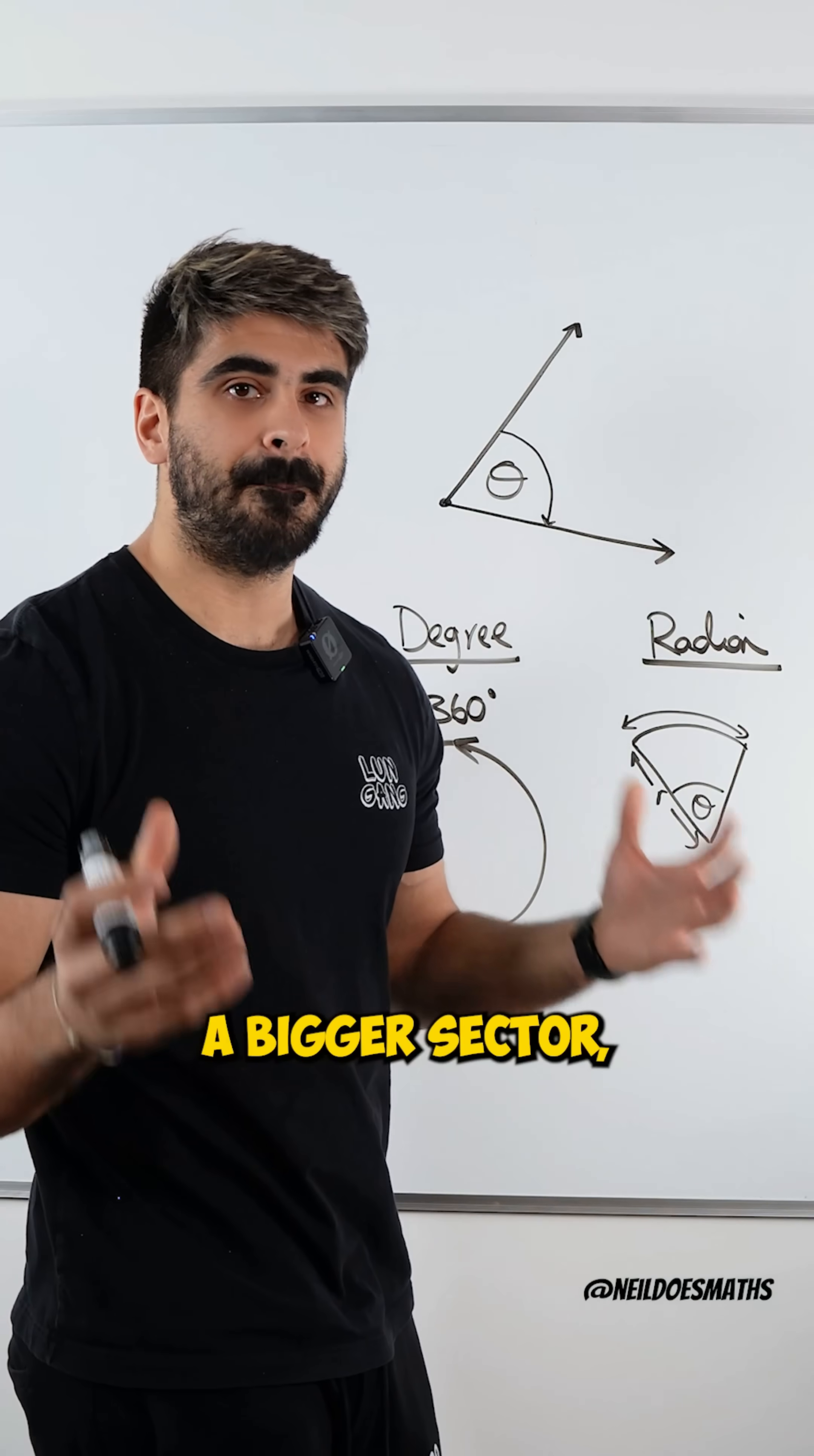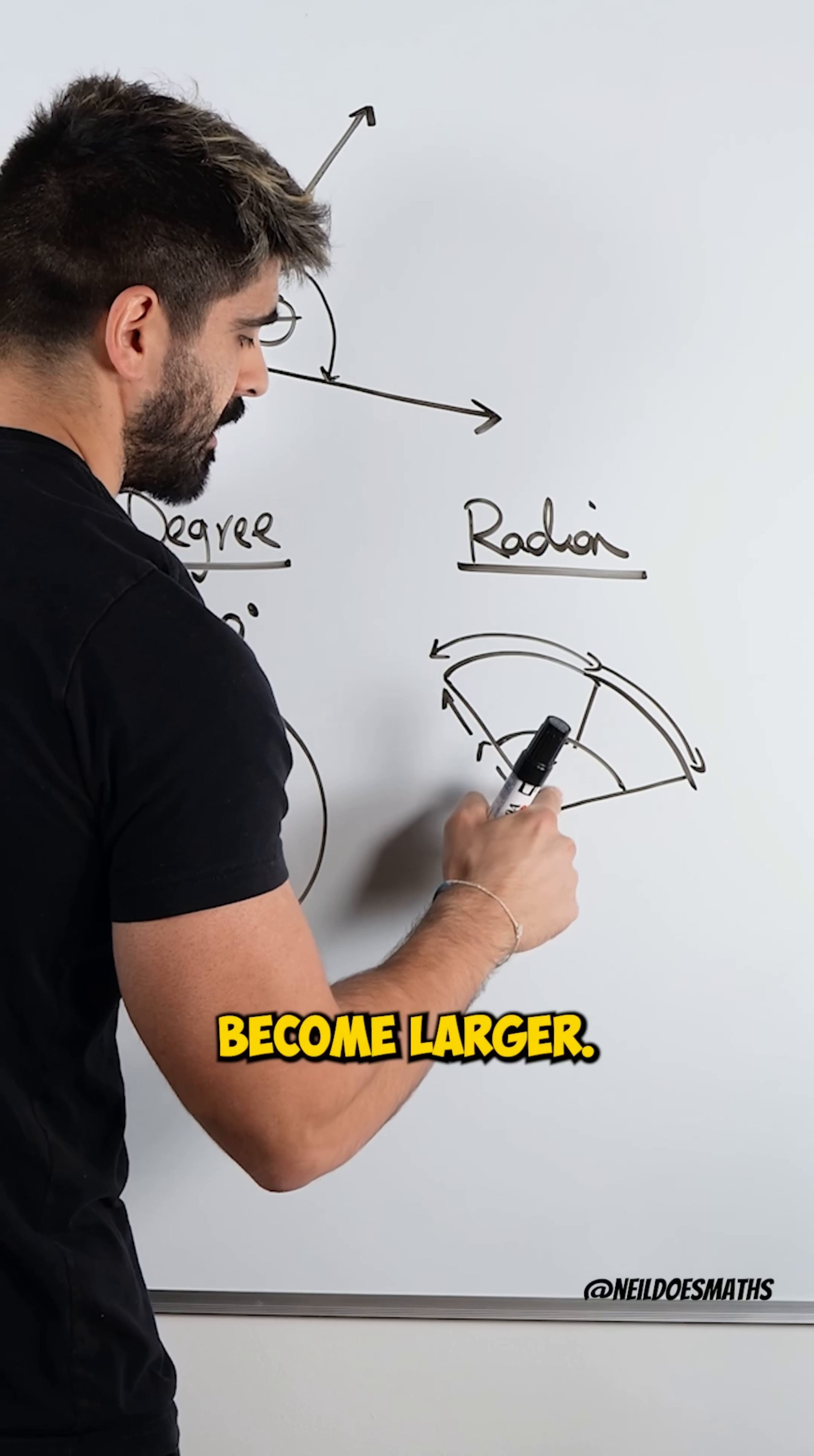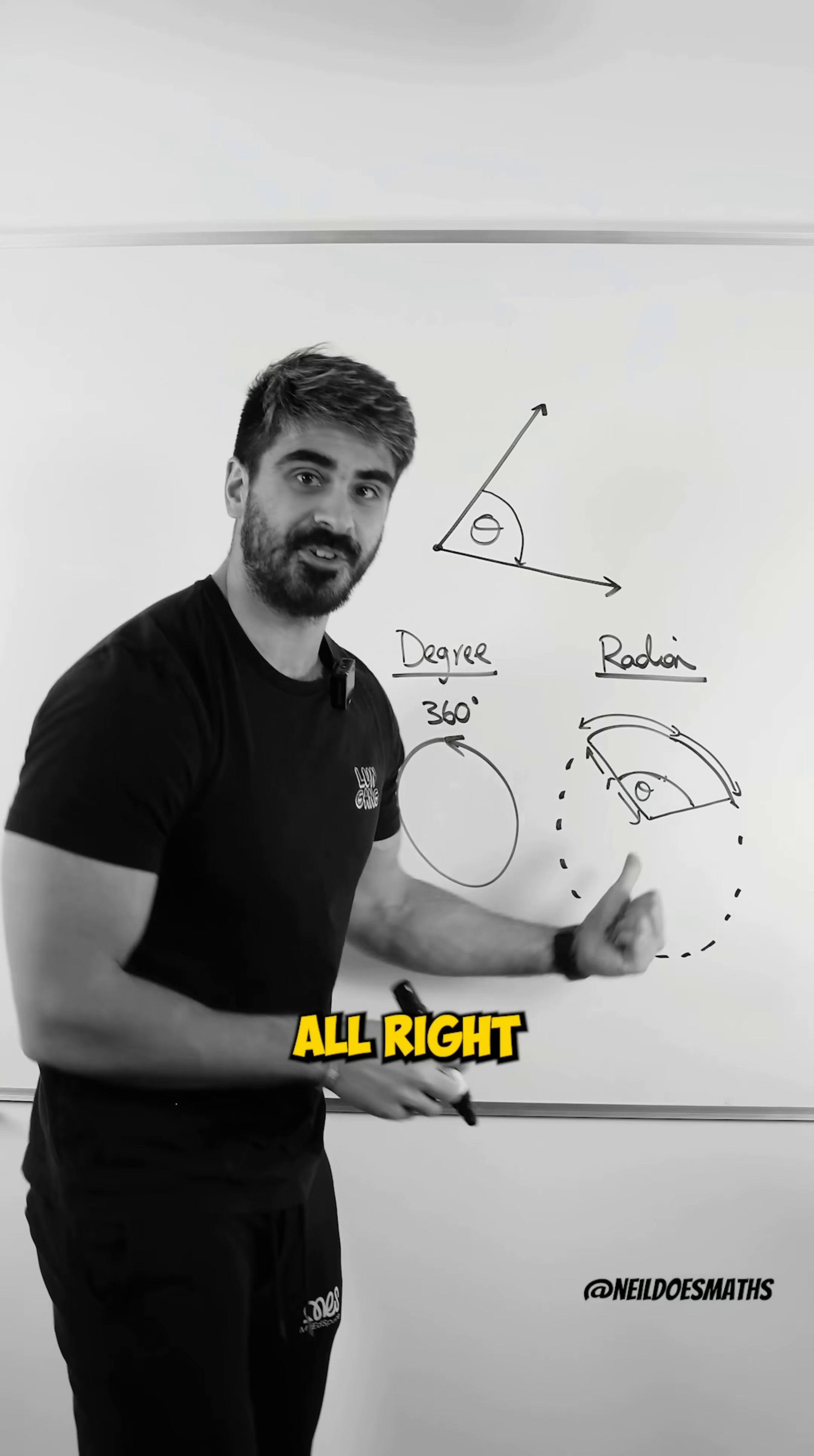So if I have a bigger sector, let's make it a little bit larger. You can see this length here becomes larger. The angle at the center would become larger. So the bigger the sector, the bigger the radian. So you can see here it's part of a larger circle.